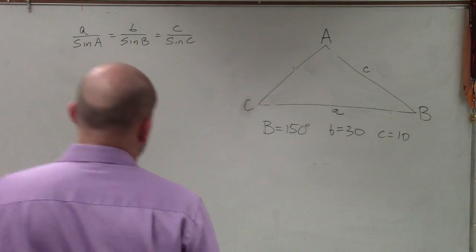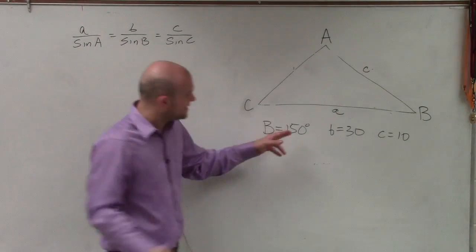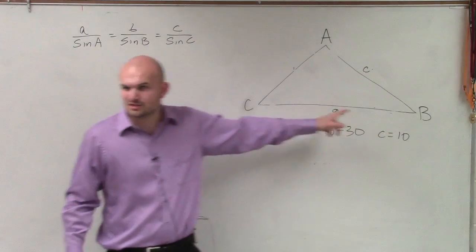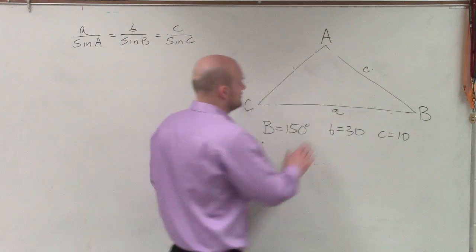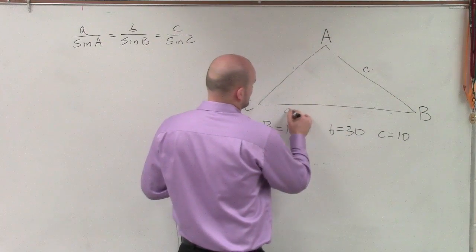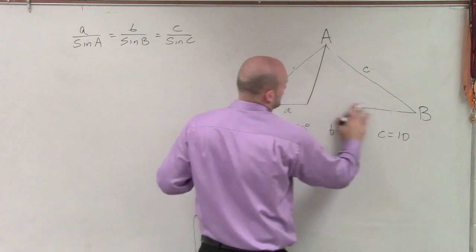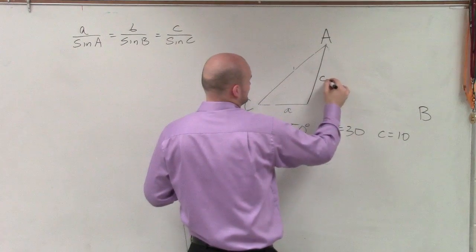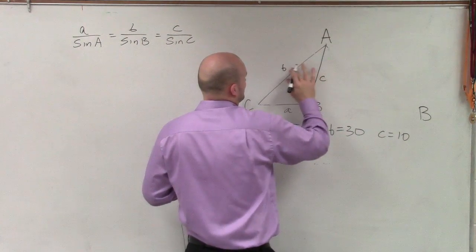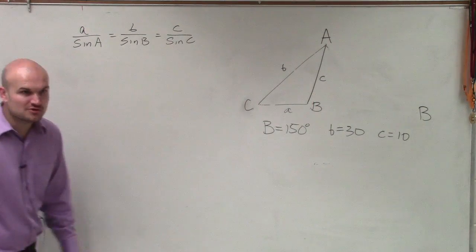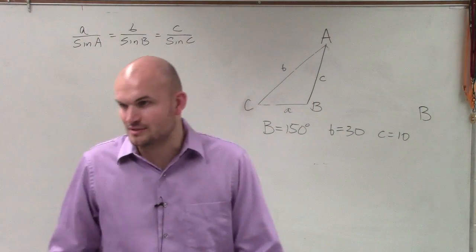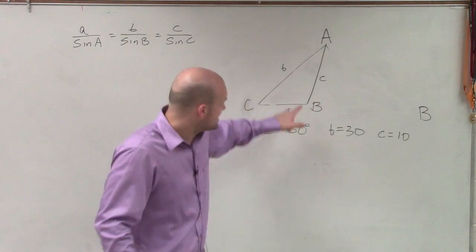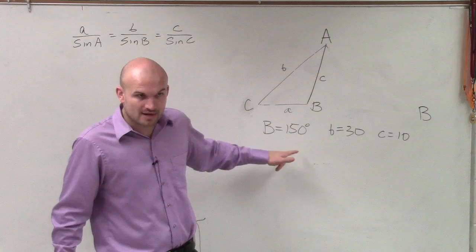Ladies and gentlemen, what we have is a triangle. You can see that B is at 150 degrees. This doesn't really look like B would be 150 degrees, but that's OK. You can have different oblique triangles — you can have an obtuse oblique triangle. Just remember, oblique means it is not going to have a right angle. This does not have a right angle; that's 150 degrees.